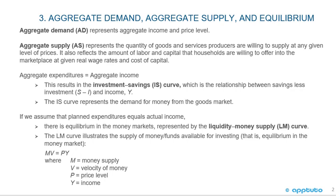Aggregate expenditures equals aggregate income. This results in the investment savings curve, the IS curve, which is the relationship between savings less investments, S minus I, and income Y. The IS curve represents the demand for money from the goods market.